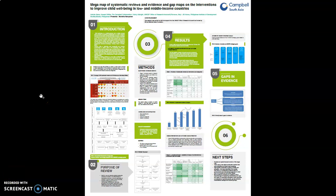Hello everybody. I'm Munisha and I represent Campbell South Asia. This poster presentation focuses on a mega map of systematic reviews and evidence and gap maps on interventions to improve child well-being in low and middle income countries. I would also like to mention that this map has been funded by UNICEF Office of Research in Innocenti and commissioned by Campbell Collaboration.